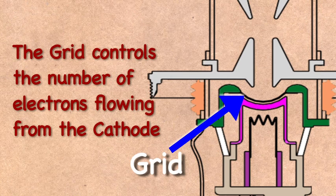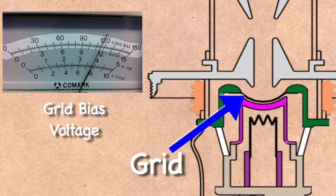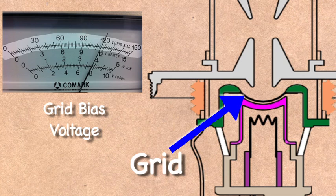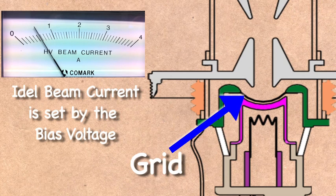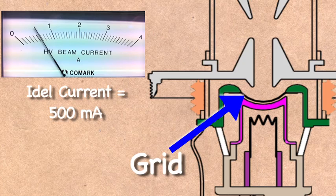To control the beam of electrons traveling from the cathode to the collector, the grid is biased to limit the amount of electrons. The amount of current flowing through the IoT with no RF applied is called the idle current, and that sets the gain of the tube also.